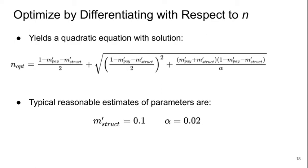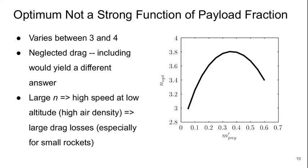If we take some reasonable estimates for typical rockets, the structure M' might be about 10% and an alpha value might be about 0.02. Then what we get is the optimum value of N as a function of payload fraction M'payload. Even though this looks like a very curvy plot, the optimum is not a strong function of payload fraction. Whether we're talking 5% or 60% of the rocket being payload, we're only talking about a 20% variation in the optimum value of N. It's always between 3 and 4.